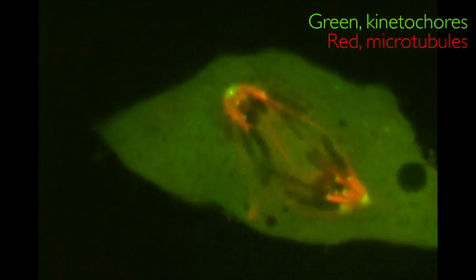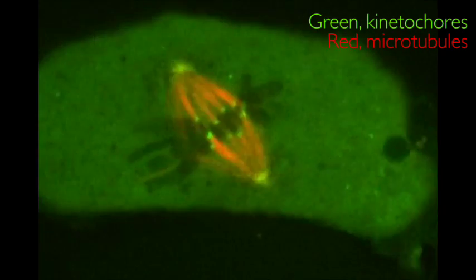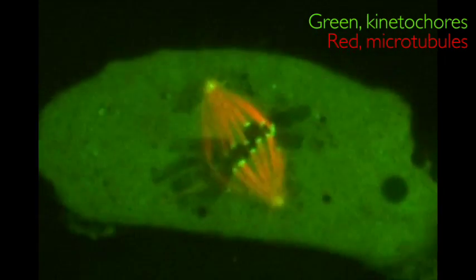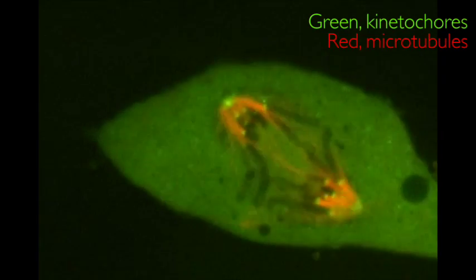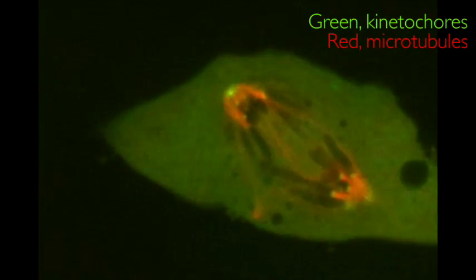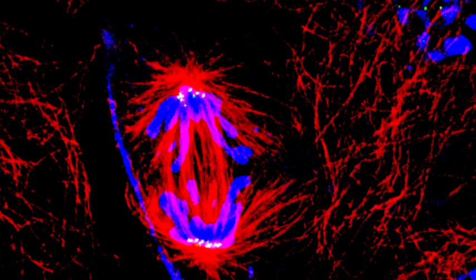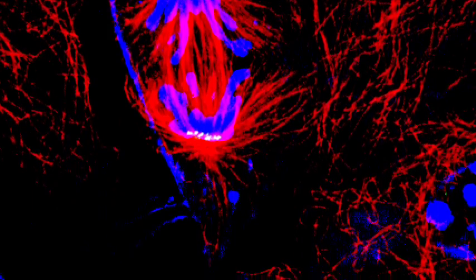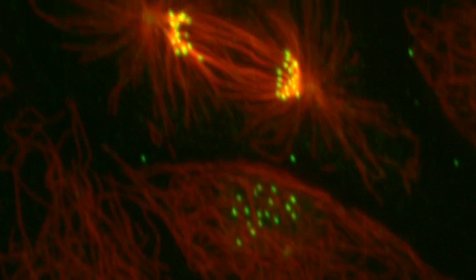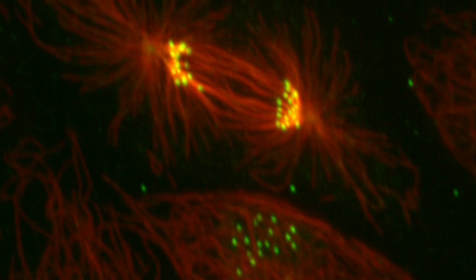Then, when the bonds between the sisters are severed, the microtubules pull the chromosomes to opposite sides of the cell. Seen in this perspective, even a normal cell division begins to look really exciting.